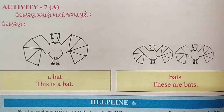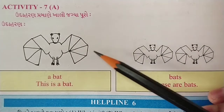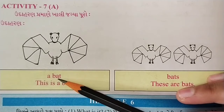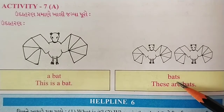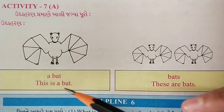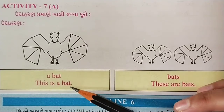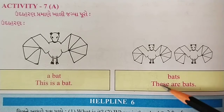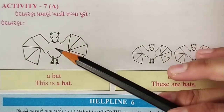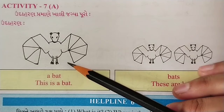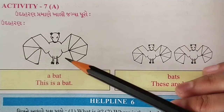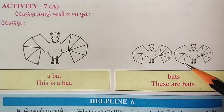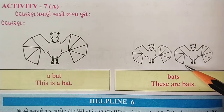Fill in the blanks as per the example. A bat. Bats. This is a bat. These are bats. Here is one bat, and here are two bats.